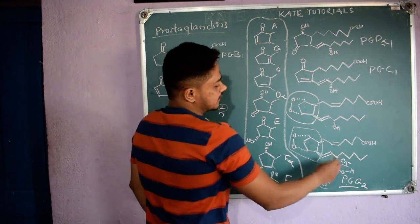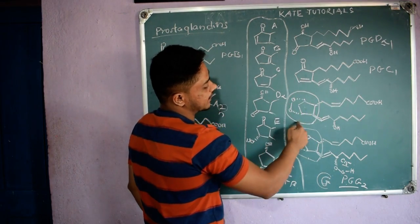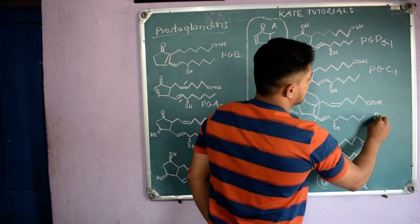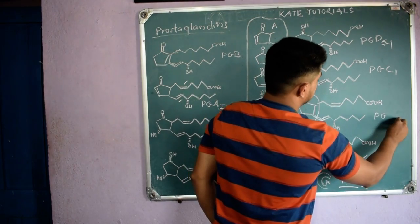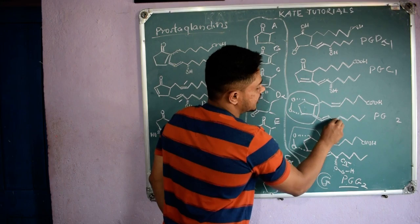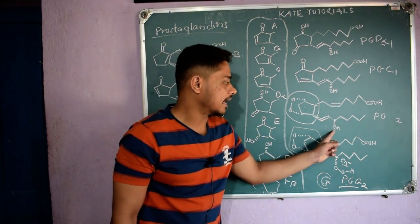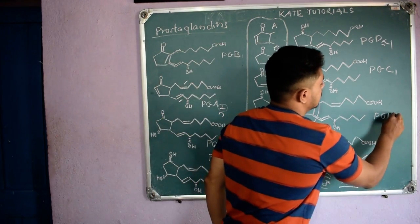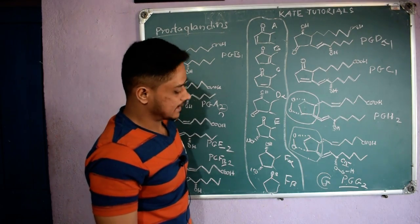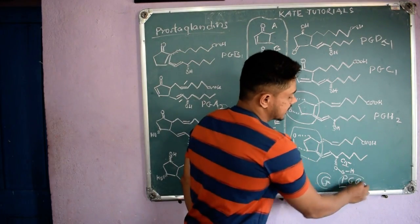PGH has the same cyclopropane ring as PGG, and the same number of pi bonds in the side chain — so n is again 2. But at C15, instead of a peroxide O–O bond, there is simply an O–H group. Therefore it is H, making it PGH2. So PGG2 has a peroxy bond at C15, while PGH2 has a hydroxyl at C15.